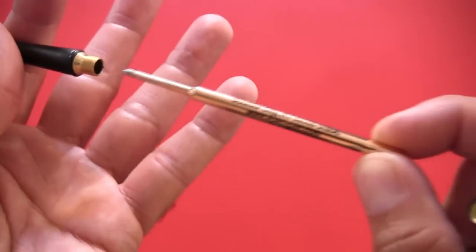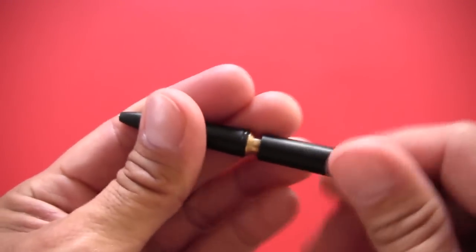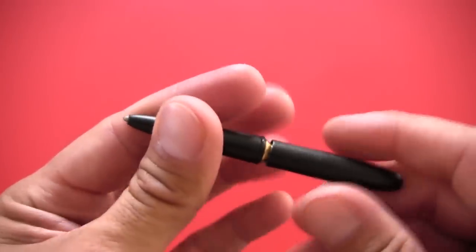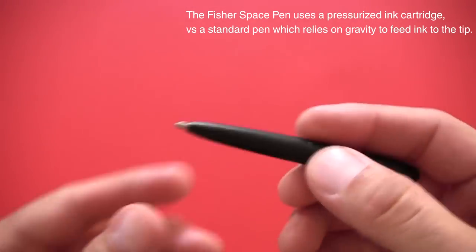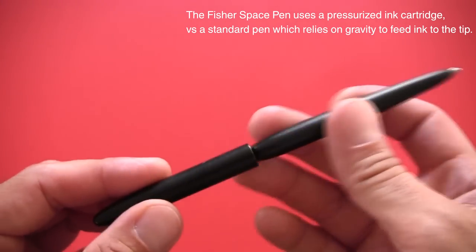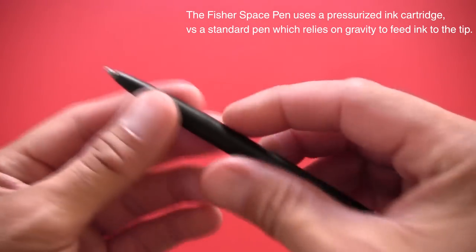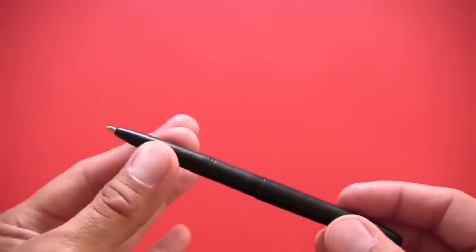As this is a Fisher Space pen, this pen writes upside down. It writes in extreme temperatures, both very hot and very cold. It writes underwater, it writes through grease. I've not had a lot of opportunities to use a lot of these extreme environments when using the pen, but I have found that in pretty much any condition that I've ever called it into duty, it's been working perfectly with no issues.